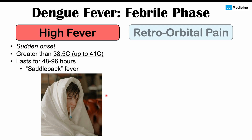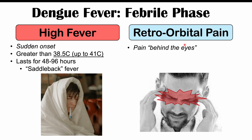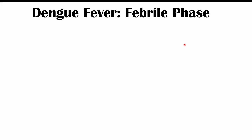Along with the high fever, we can also have retroorbital pain. This can be an important and somewhat specific finding with regards to dengue fever. Retroorbital pain is pain behind the eyes. Some other conditions like leptospirosis can also have retroorbital pain, but dengue fever is one of the important conditions that can cause it.